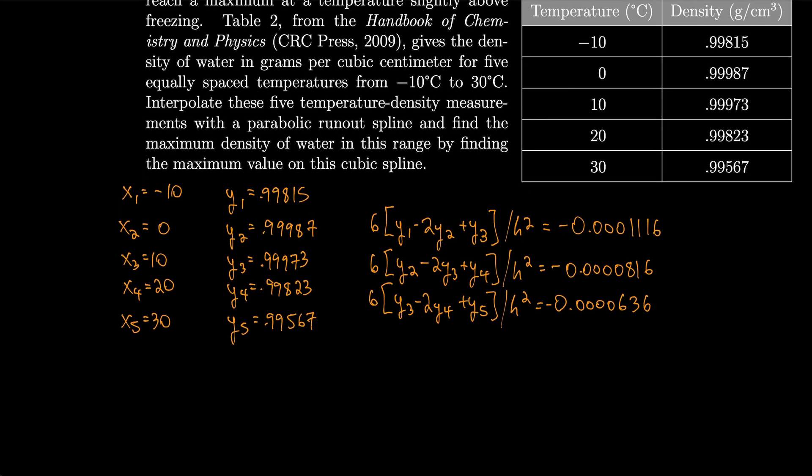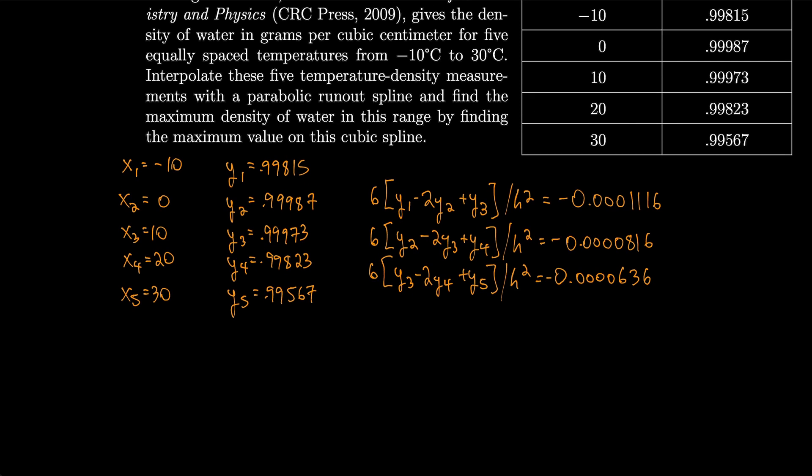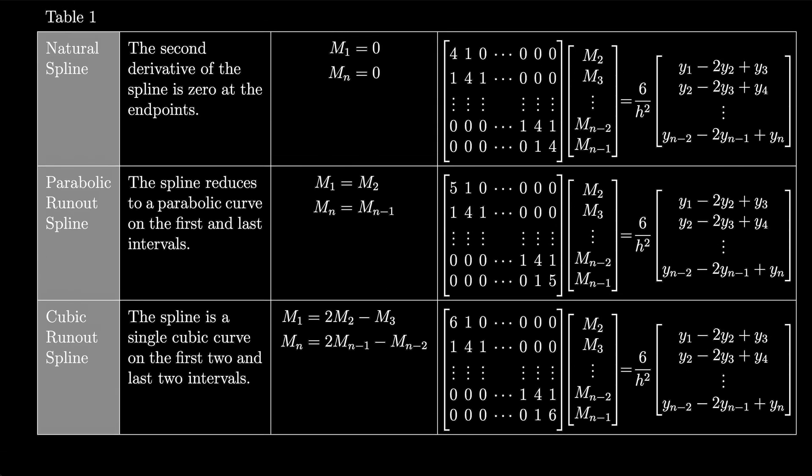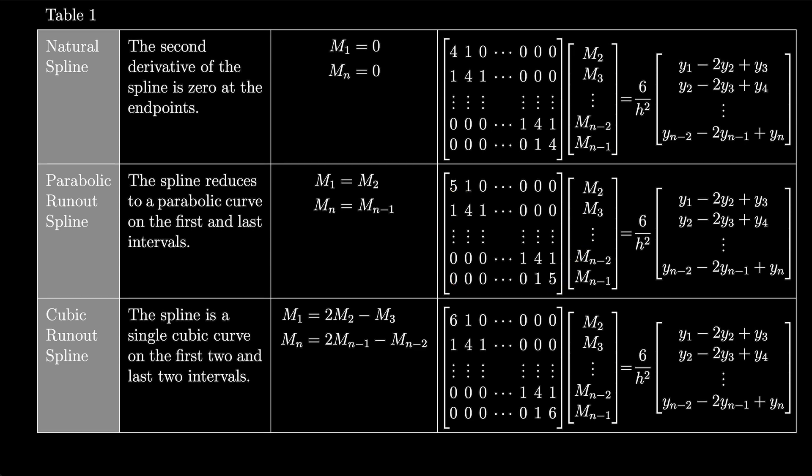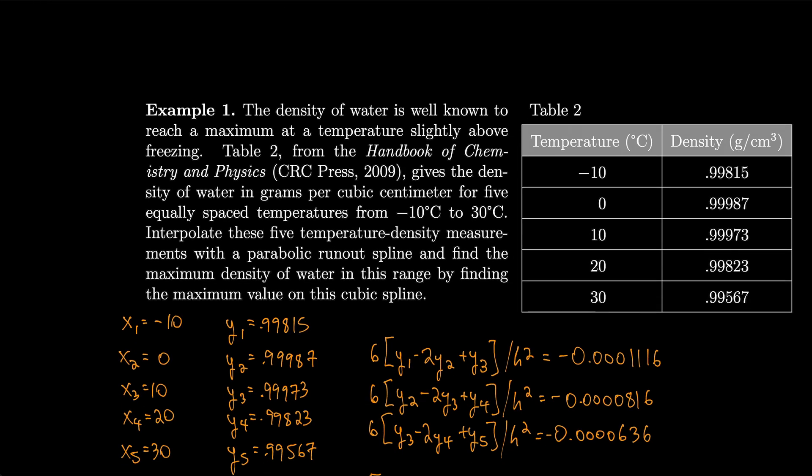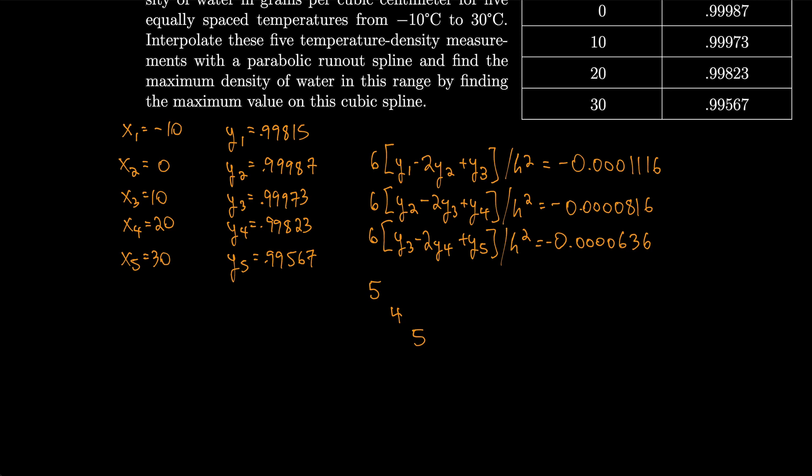So this allows us to set up an equation where we have 5, 4, 5 for the parabolic. We're setting up this right over here. And 1, 0, 1, 1, 0, 1.